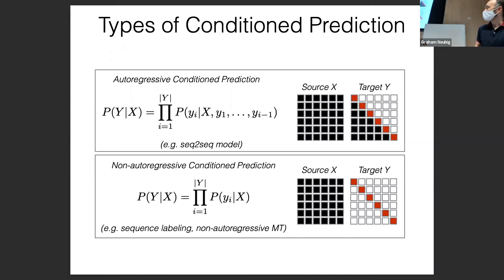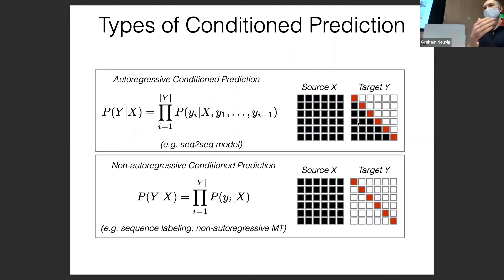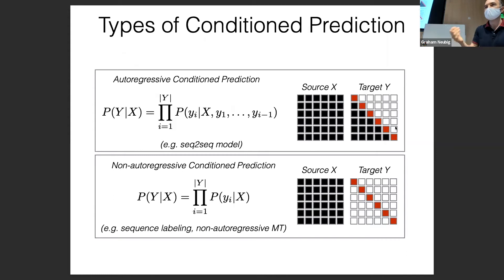Non-autoregressive models are faster and easier to implement. One advantage is avoiding exposure bias — autoregressive models that make a mistake tend to repeat it because they've only been trained on correct data. That being said, autoregressive models are usually better than non-autoregressive ones.